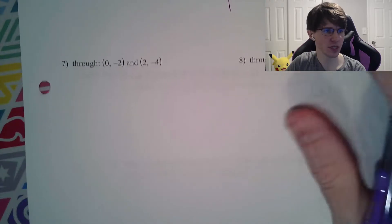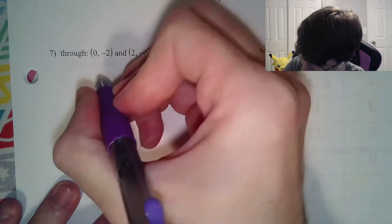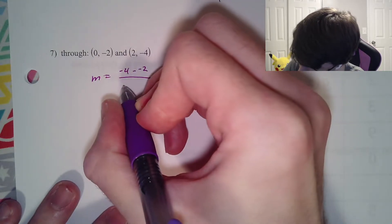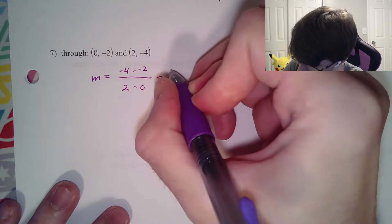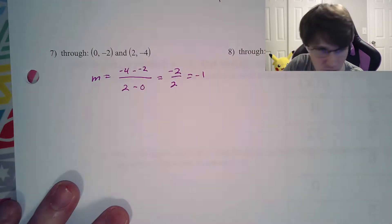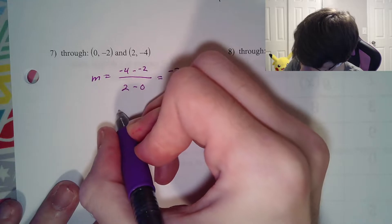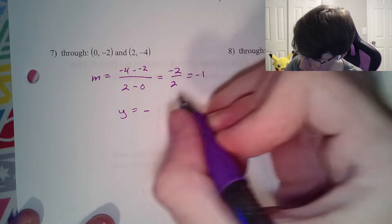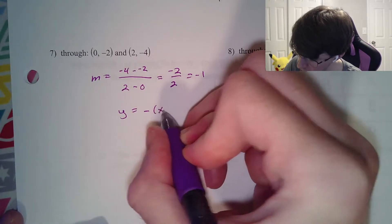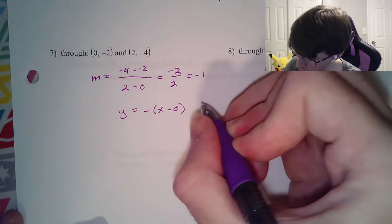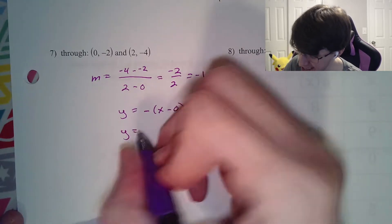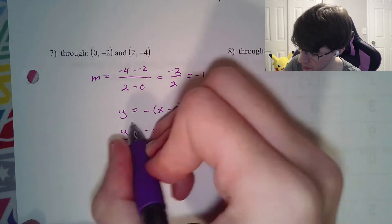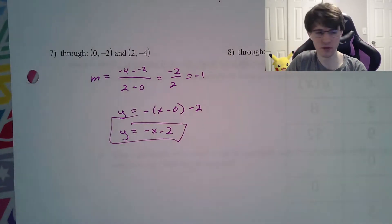Number 7: our m equals y2 minus y1 over x2 minus x1, giving negative 2 over 2, which is just negative 1. We'll practice writing just a negative sign without the 1. So y equals negative times x minus 0, minus 2, which also creates the slope-intercept version because you distribute the negative and it's just times 0.